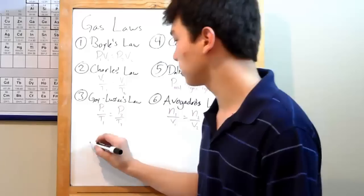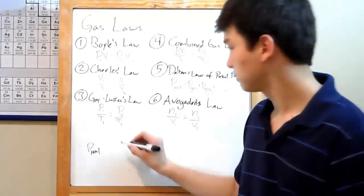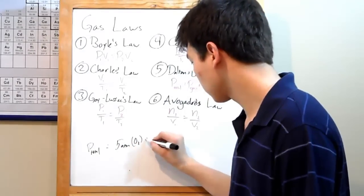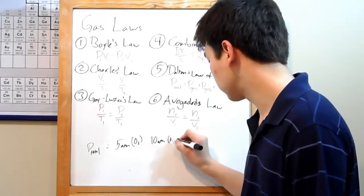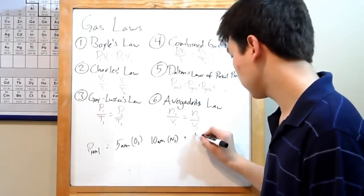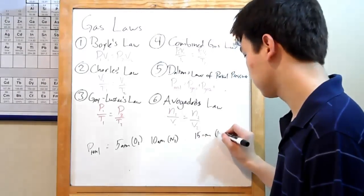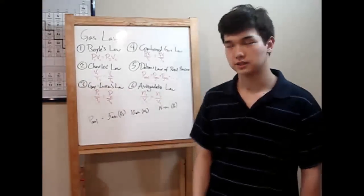Like, if you wanted to know what the pressure, P total, in your system is, and you had 5 atmospheres of oxygen, 10 atmospheres of nitrogen, and 15 atmospheres of polonium gas. Unusual. And you want to know what the total pressure is. Add it up.